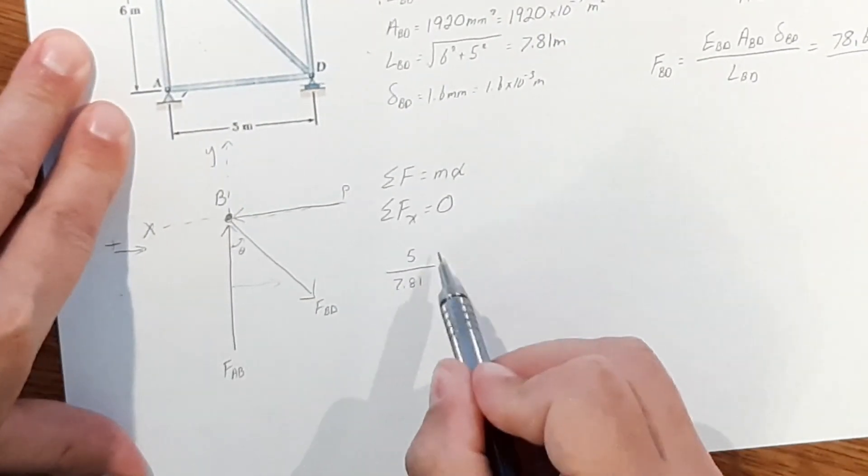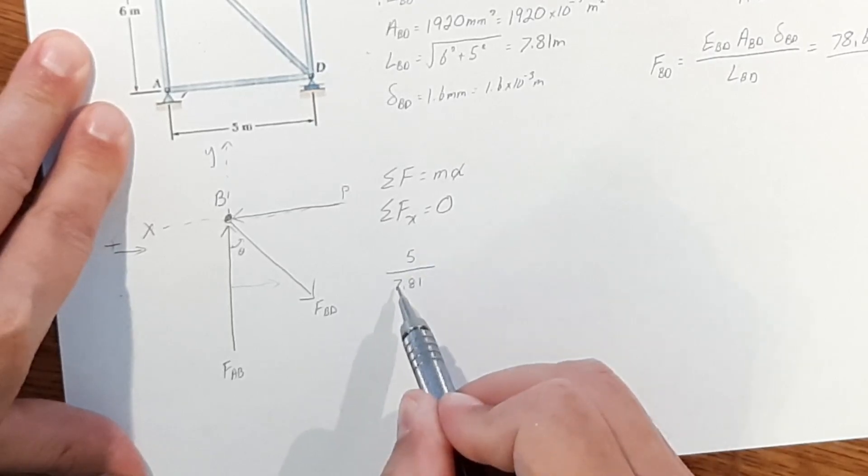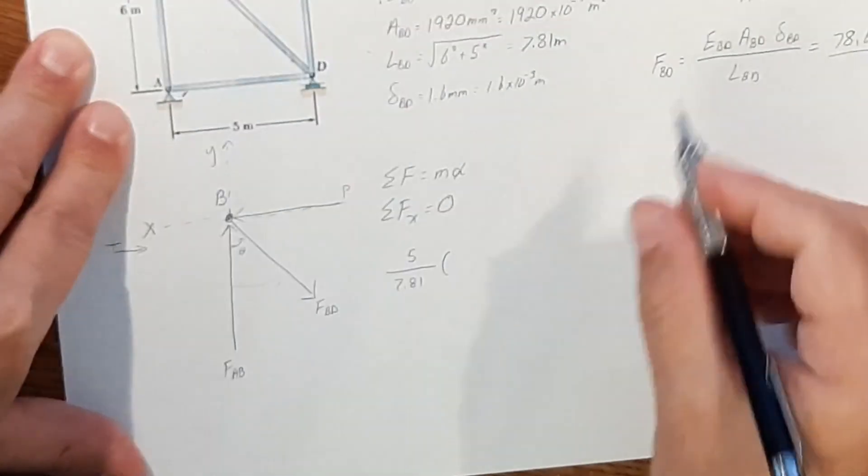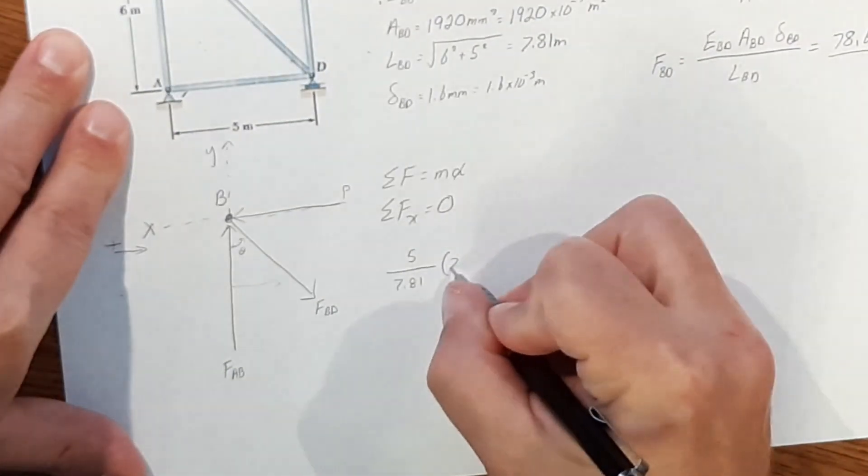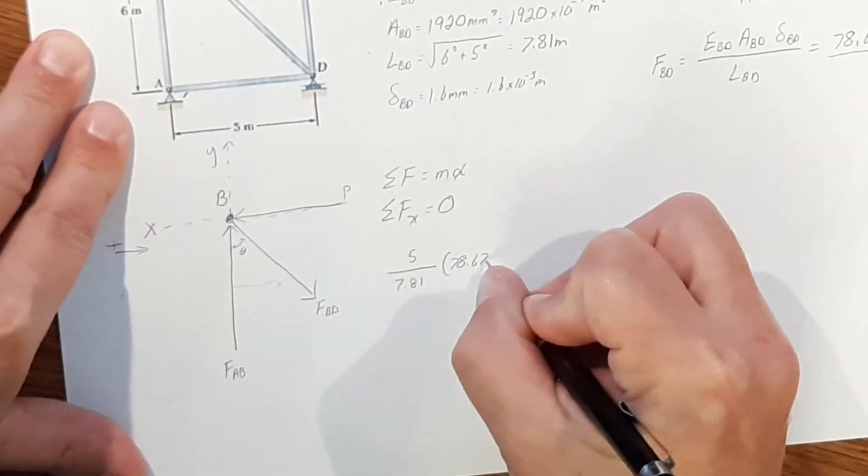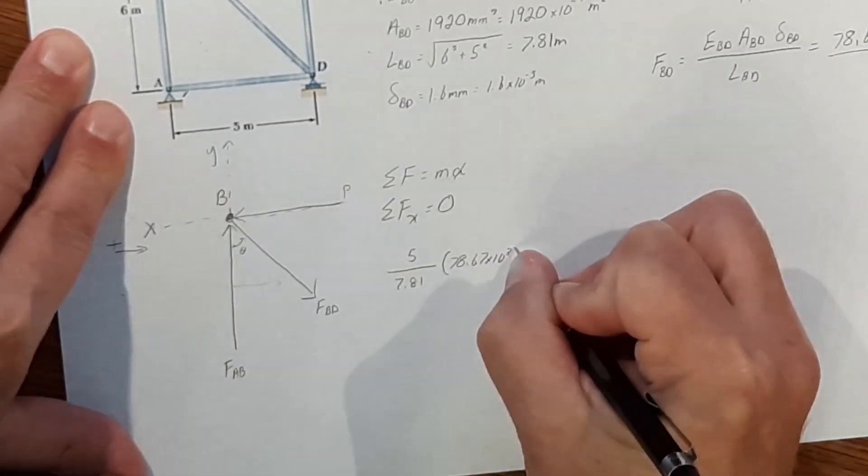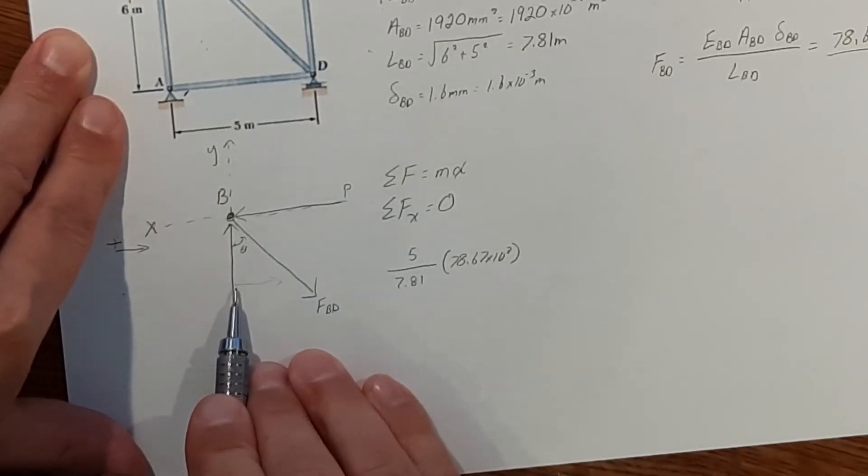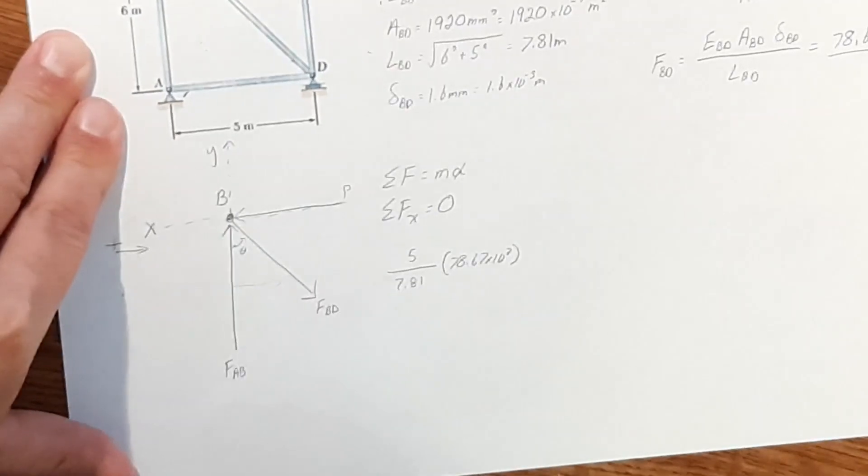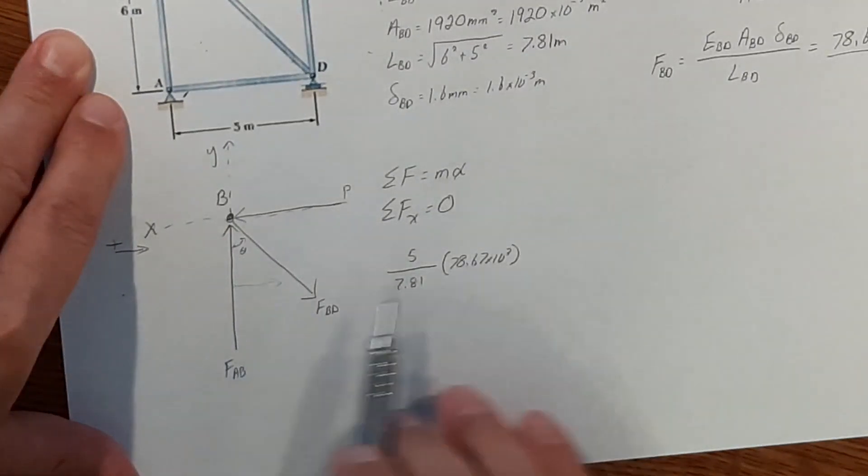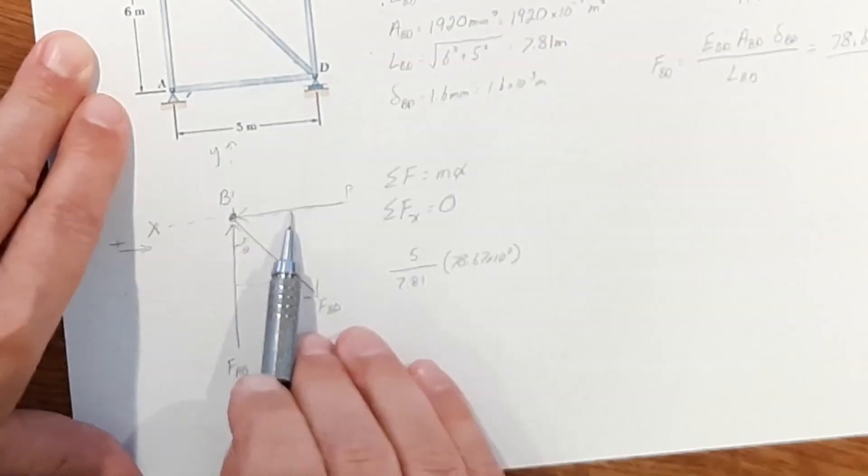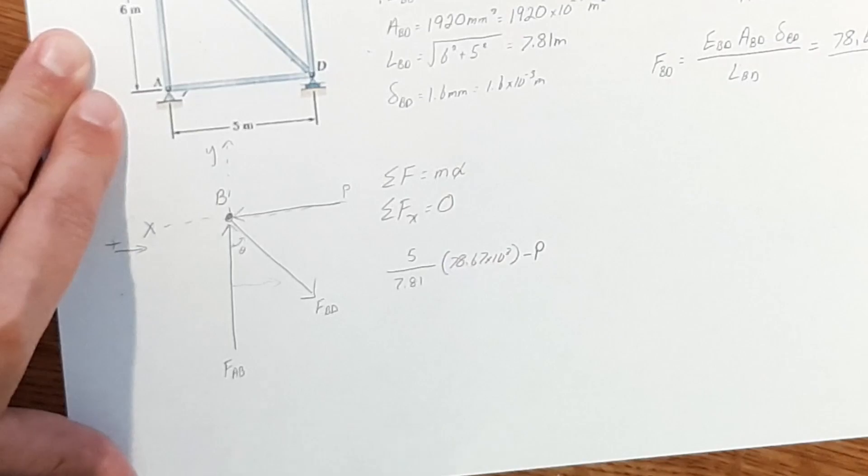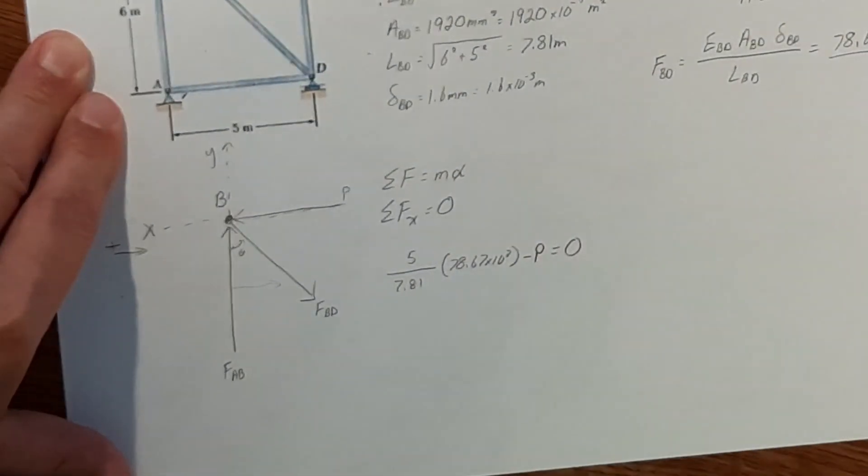So this fraction is going to give us the sine function, and we need to multiply that by the force BD, which is 78.67 times 10 to the third. So we have our x component of F of BD, and the only other force acting in the x direction is P, but it's going the opposite way. So we're going to subtract P, and that should all equal zero.